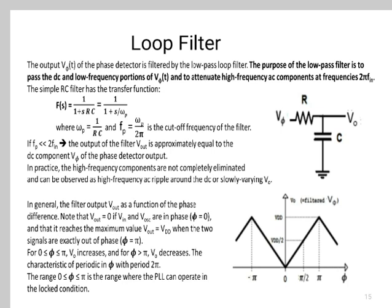In general, the filter output V_out is a function of the phase difference φ. Note that V_out is 0 if V_in and V_oscillator are in phase (φ = 0), and it reaches the maximum value V_out = Vdd when the two signals are exactly out of phase (φ = π). For φ between 0 and π, V0 increases; for φ greater than π, V0 decreases. The characteristic is periodic in φ with period 2π. The range of φ between 0 and π is the range where the PLL can operate in the locked condition.